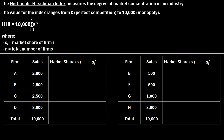The formula to calculate the Herfindahl-Hirschman Index, which we typically abbreviate as HHI, is 10,000 times the sum from i equals 1 to N of S sub i squared, where S sub i represents the market share of firm i, and N is the total number of firms.